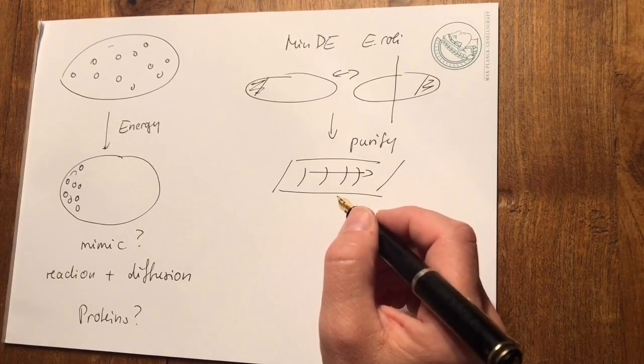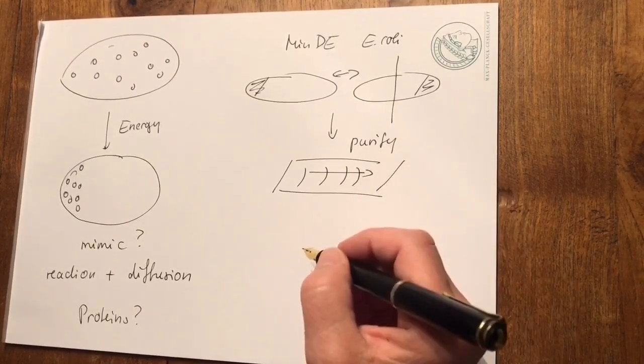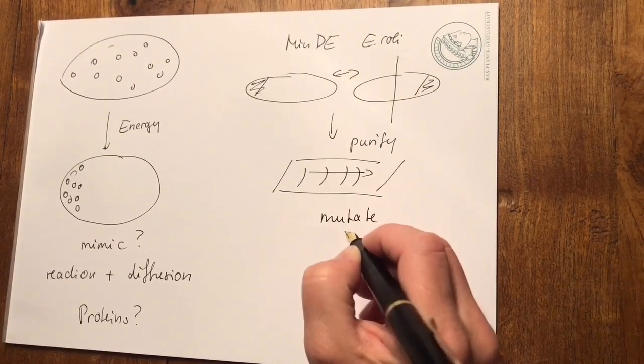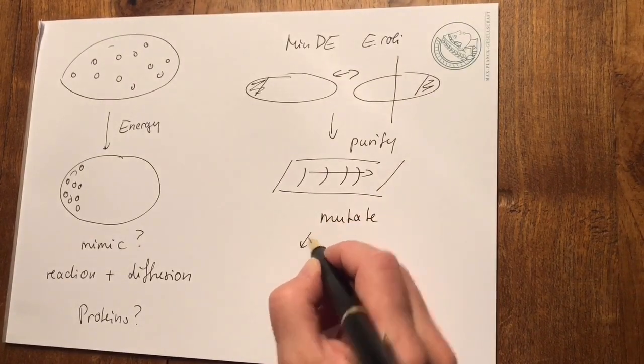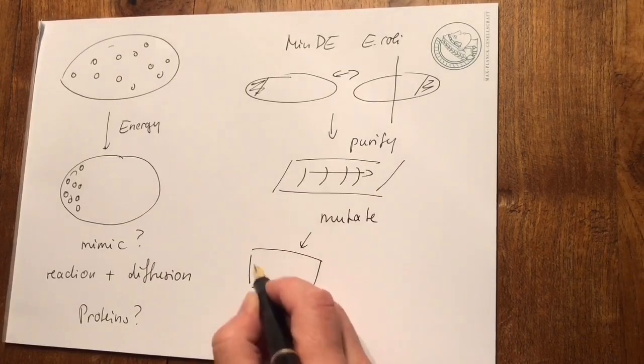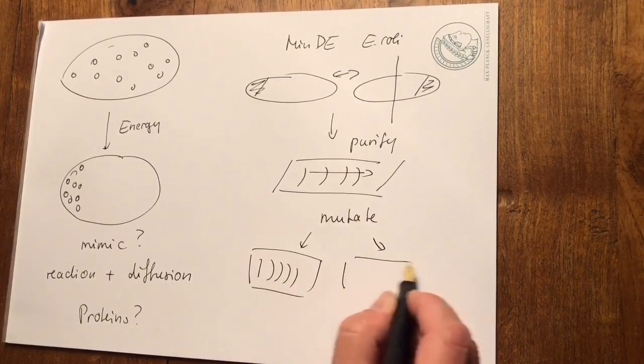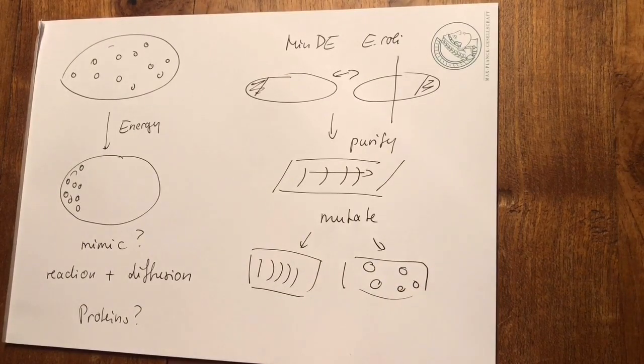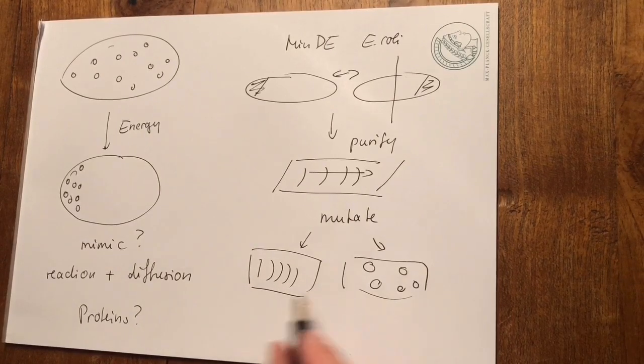And the cool thing is now that we can not only use the proteins, but we can also mutate them. And by this produce different patterns. For example, smaller wavelengths or completely different ones like leopard skins. So we now understand what we have to do to the system to create particular patterns.